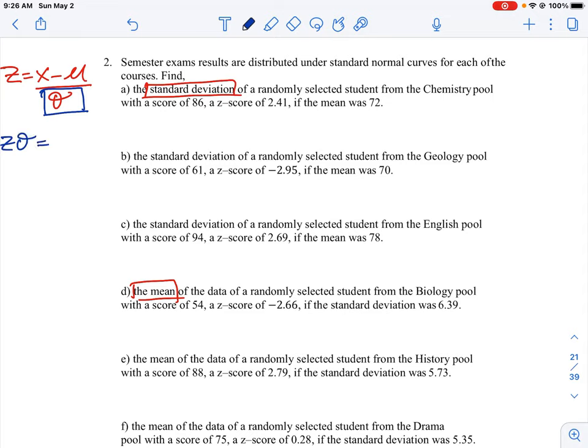So we can do a simple cross multiply and bring the standard deviation up to the top. So it's going to be z times sigma is equal to x minus the mean mu, and then we need to further isolate sigma. So we would divide both sides by z, so that this cancels out.